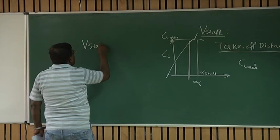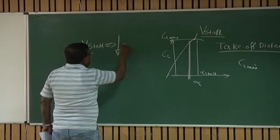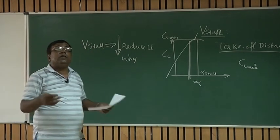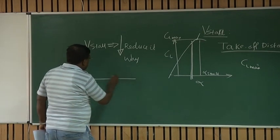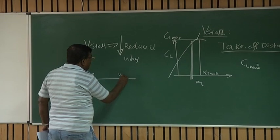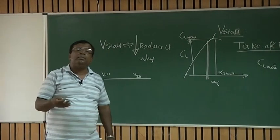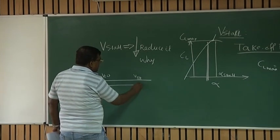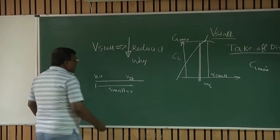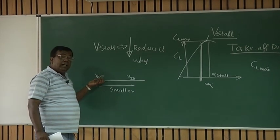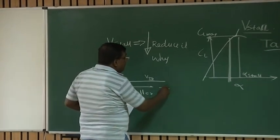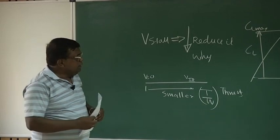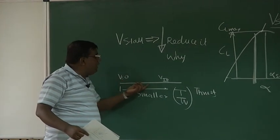So if I want to reduce V stall, why should I reduce? Because we are talking about takeoff. I am starting from V equal to 0 to V takeoff. It will be 10 to 20 percent more than the V stall and it goes up. If I want this distance to be smaller, what are the options I have got? I could put an engine which is having very high thrust-to-weight ratio, because this is responsible for acceleration. This T is thrust, loosely means a high power engine. Then if it accelerates very fast, it takes smaller distance to get to V takeoff. If it is a lowly powered engine, then it will take longer distance.